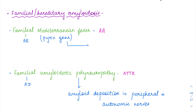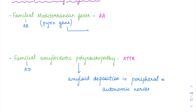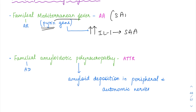Moving on to familial or hereditary amyloidosis: the first example is familial Mediterranean fever, an autosomal recessive disease with a mutation in the PYRIN gene. PYRIN stands for fever, so these patients have fever. The PYRIN gene mutation results in excess interleukin-1 production, leading to inflammatory cytokines which form the serum amyloid associated SAA — the same AA type amyloid as in secondary amyloidosis.